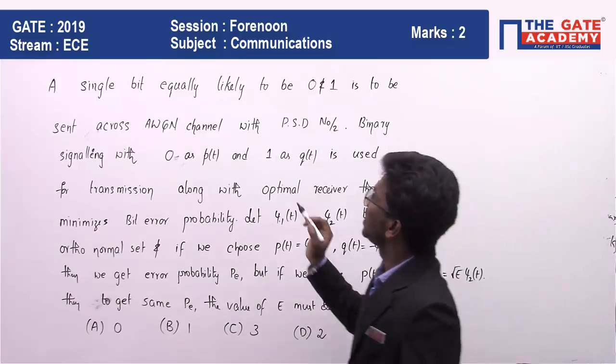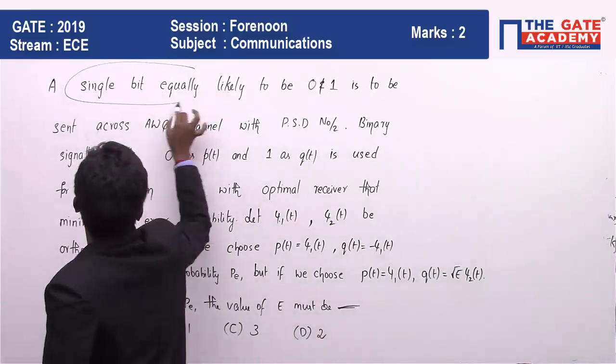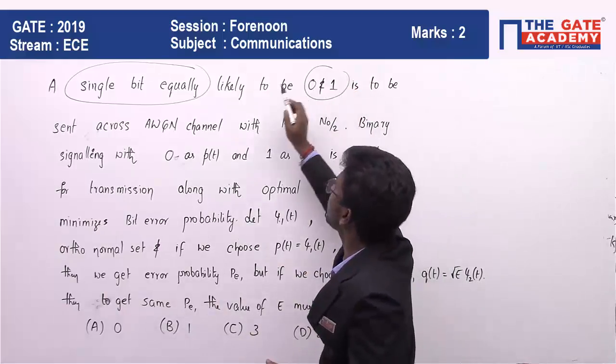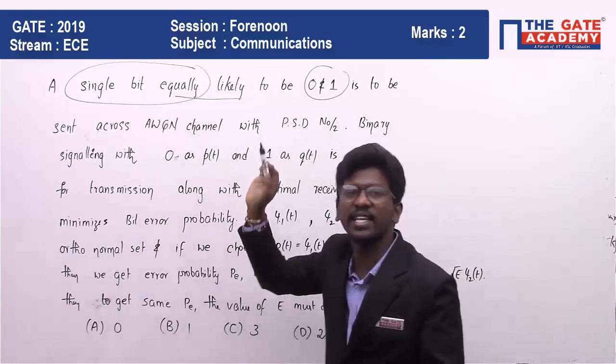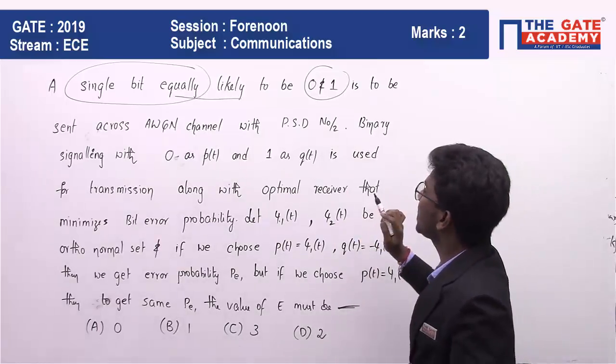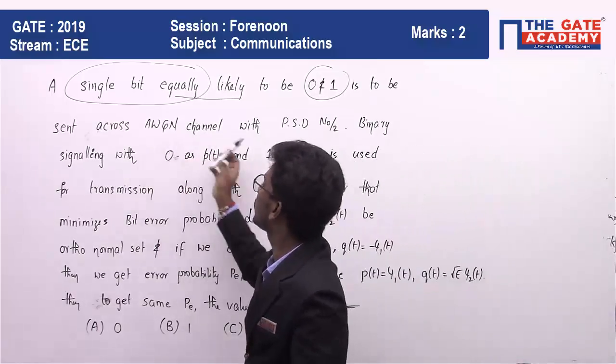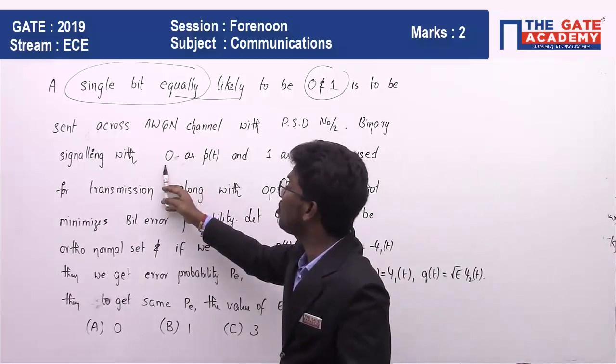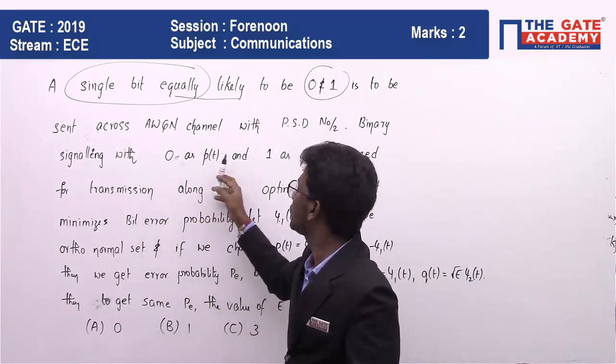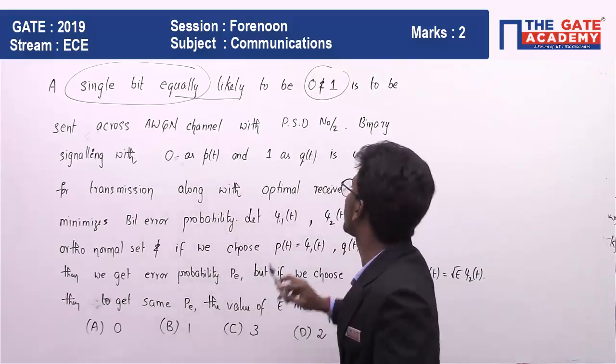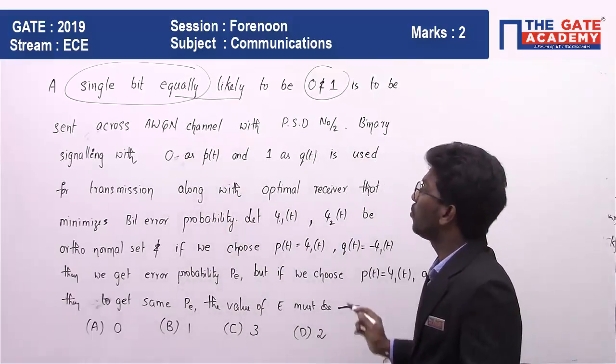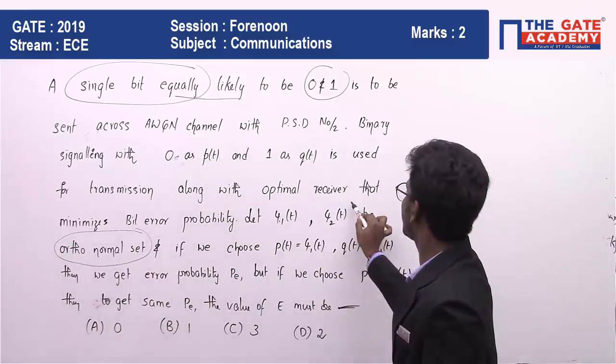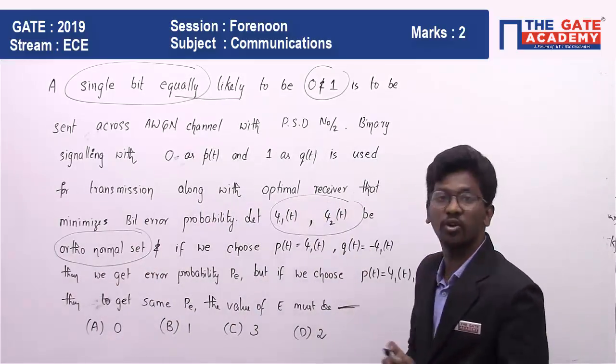So see here, we are having 1 bit which is to be transmitted. 1 bit means it can be either 0 or 1 and it is equally likely, means both are having equal probability. This is transmitted over AWGN channel, and 0 is to be coded as rectangular signal P(t) and 1 as Q(t). The orthonormal sets he has given are ψ1(t), ψ2(t).